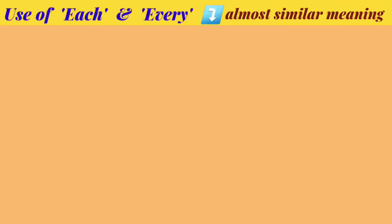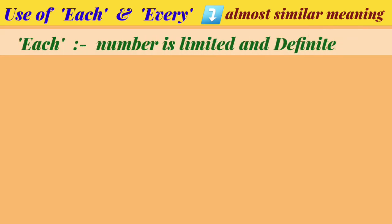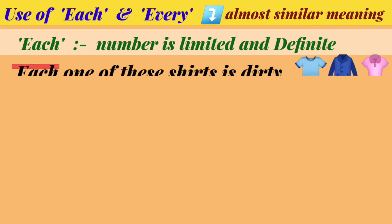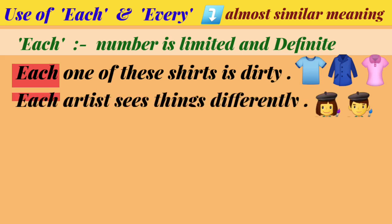Next is each and every. Each is used to refer to two or more things or people. It is used when the number in the group is limited and definite. For example, each one of these shirts is dirty. Each artist sees things differently.